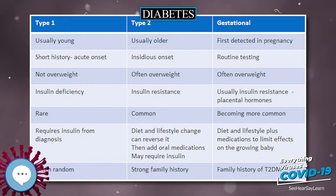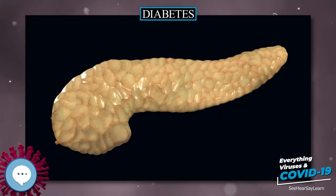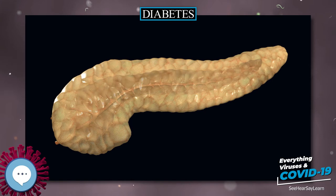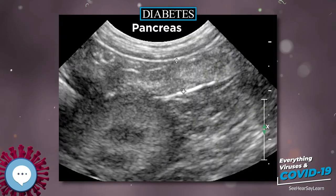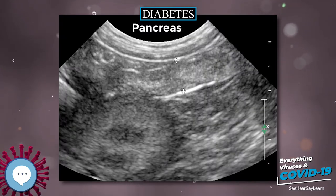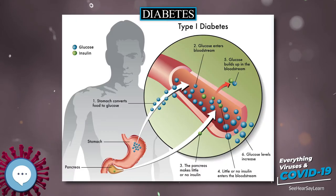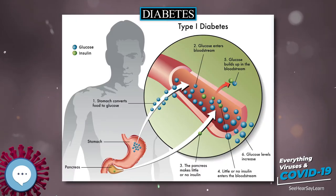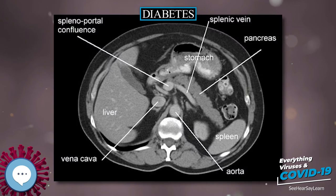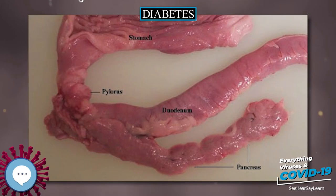The symptoms can include numbness, tingling, pain, and altered pain sensation, which can lead to damage to the skin. Diabetes-related foot problems, such as diabetic foot ulcers, may occur and can be difficult to treat, occasionally requiring amputation. Additionally, proximal diabetic neuropathy causes painful muscle atrophy and weakness.